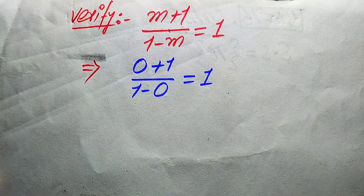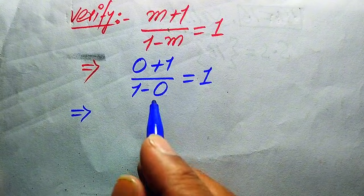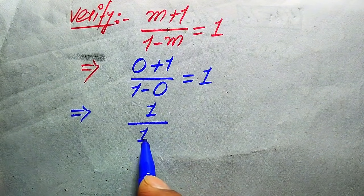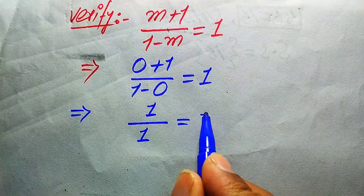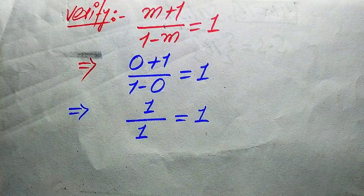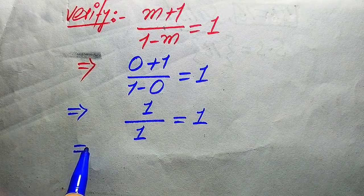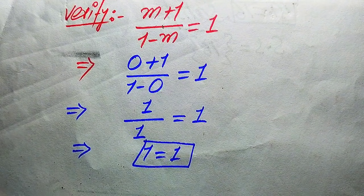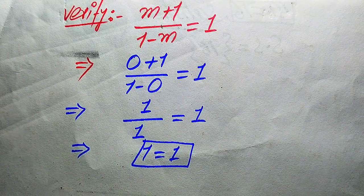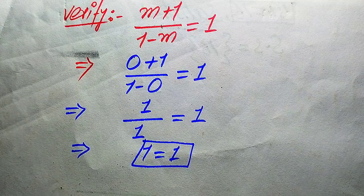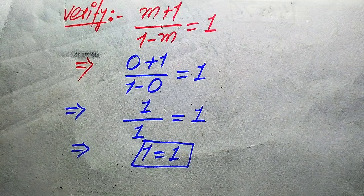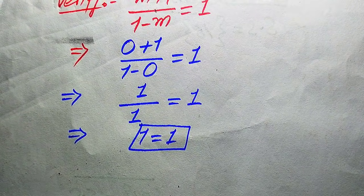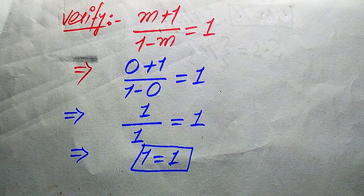When we put m equals 0, it becomes: (0 plus 1) divided by (1 minus 0) equals 1. Simplifying: 1 divided by 1 equals 1. The whole equation equals 1 on both sides. So 1 over 1 equals 1 equals 1 — both sides are equal, which means the value m equals 0 satisfies our given equation.